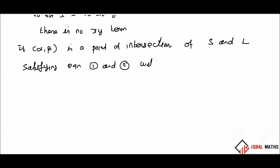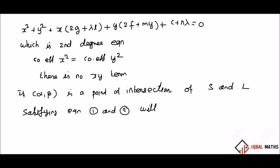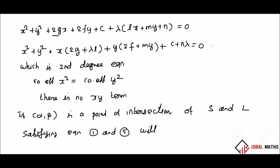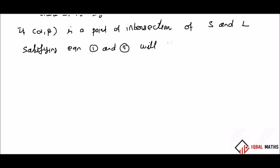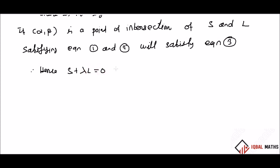Where do we satisfy this equation? We satisfy equation 3. We add to the equation: S plus lambda L equal to 0. This is the circle of the result — it represents the circle.